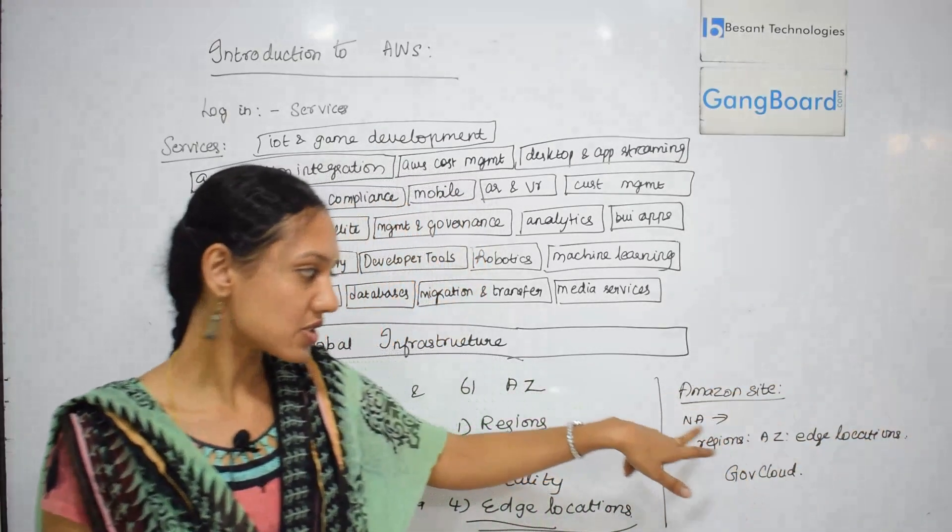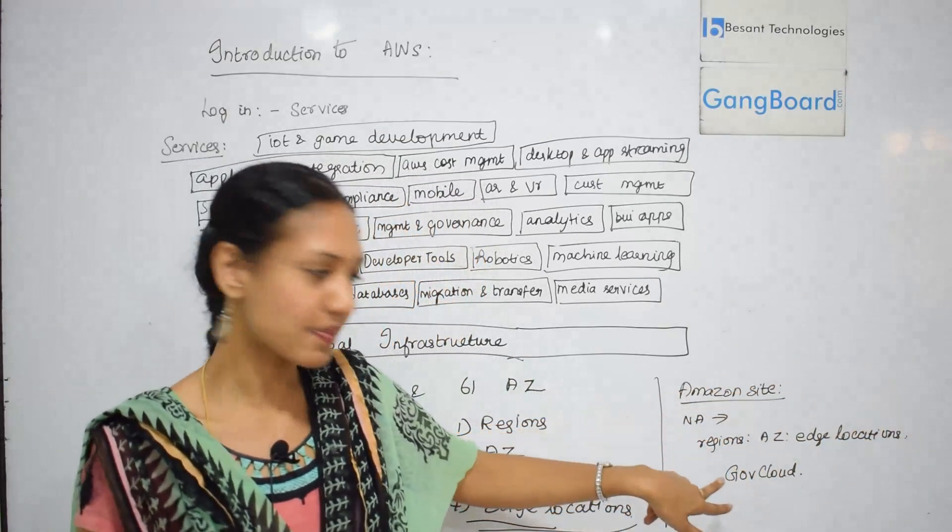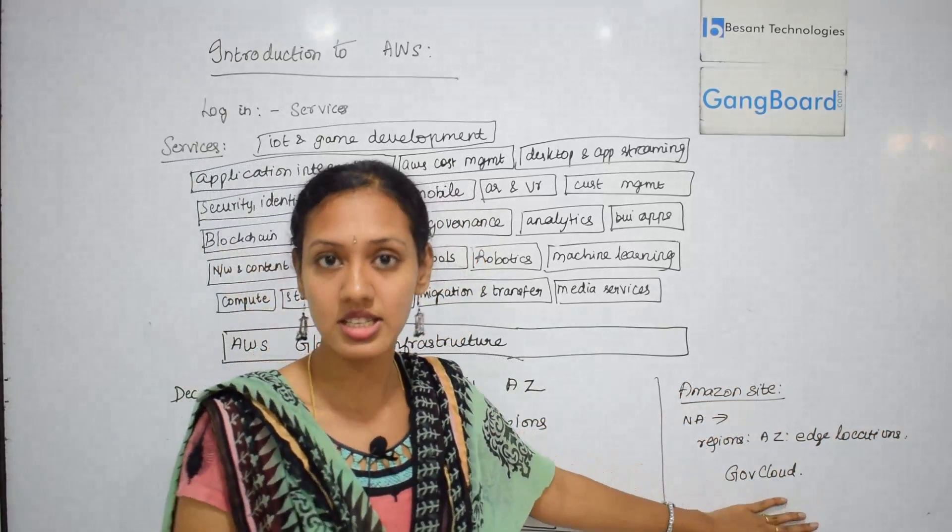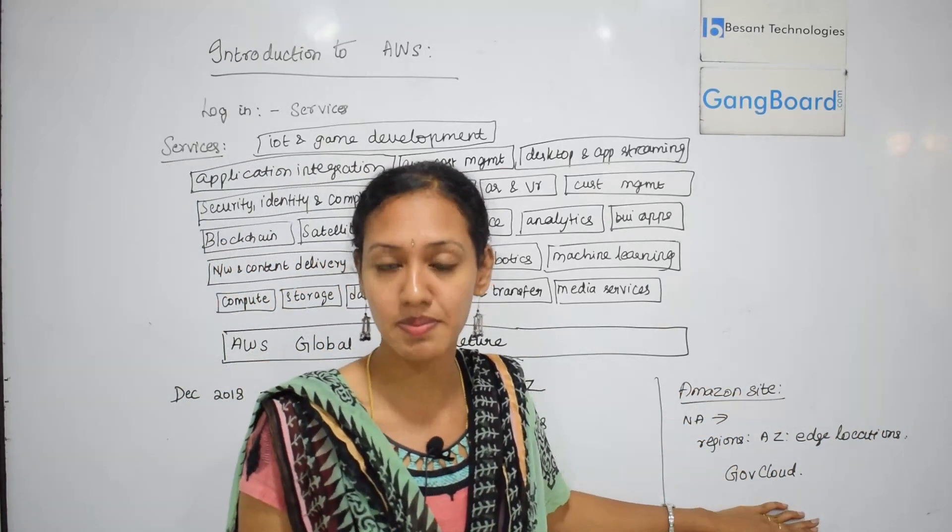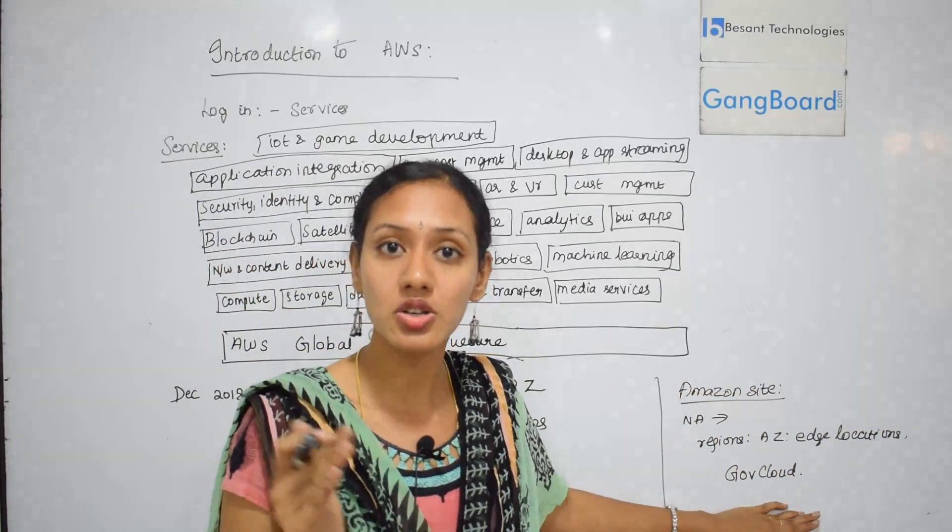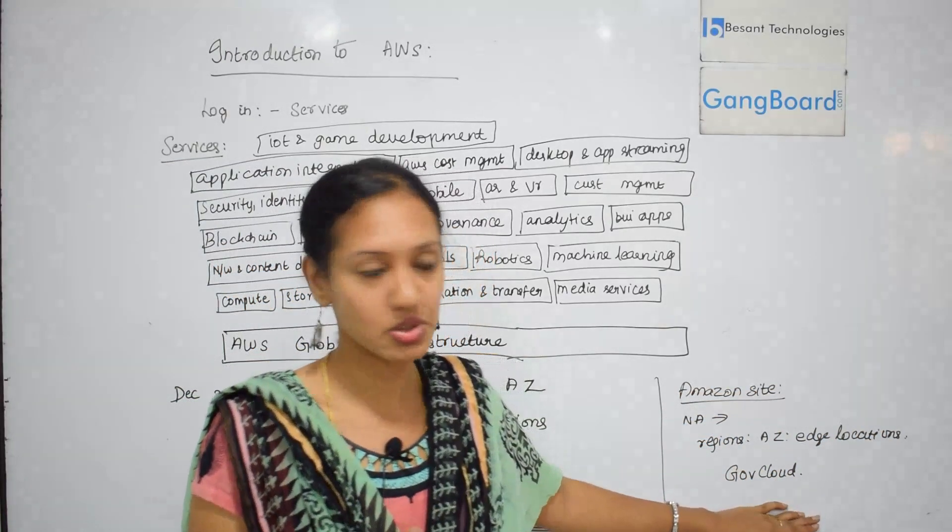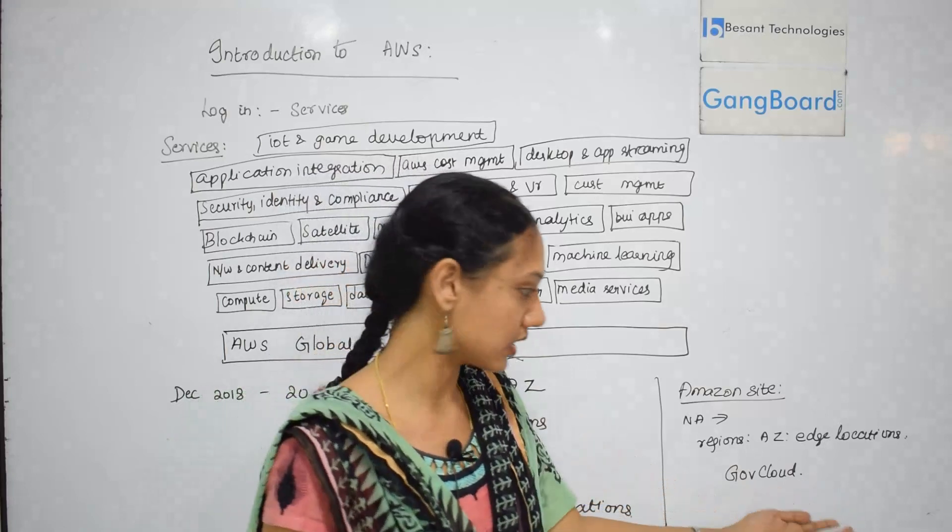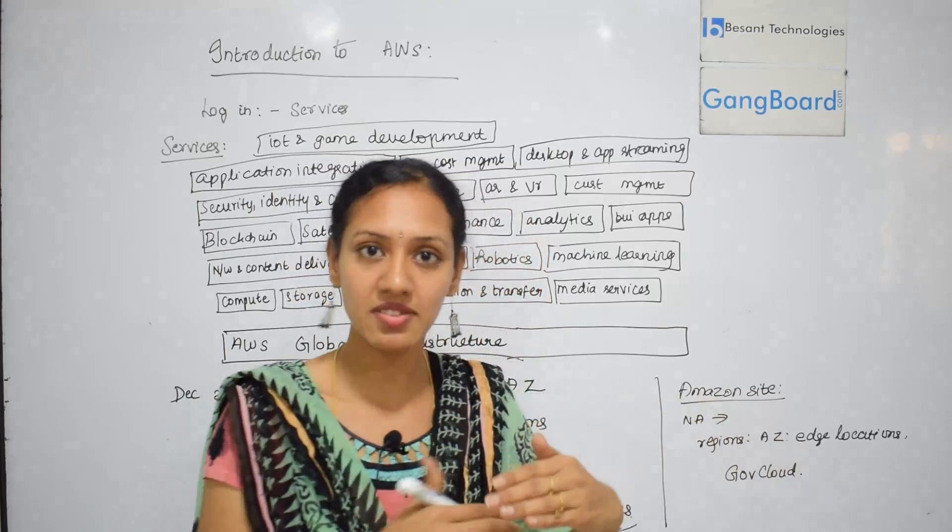Along with the region, when you see in North America, there will be something called GovCloud region. This GovCloud region is used only for security compliance purposes by US officials or used only by the citizens of US. It is a specific cloud that is granted to the United States.